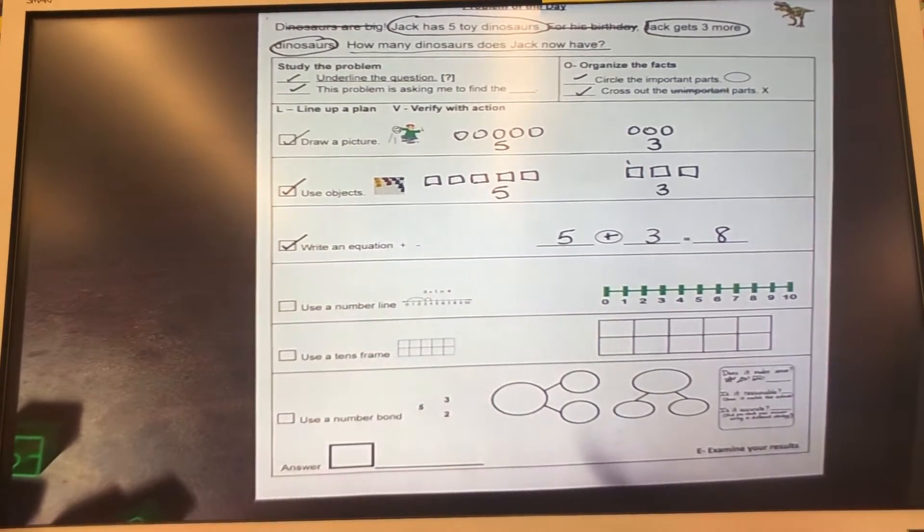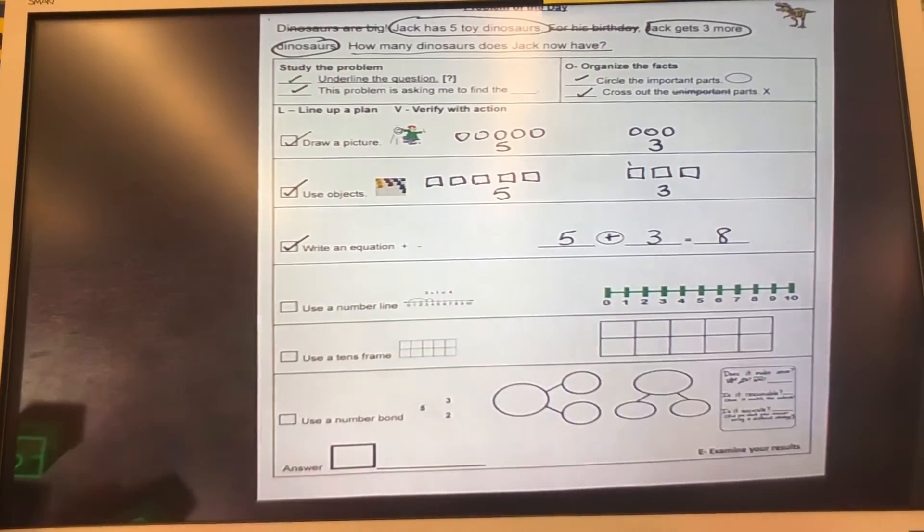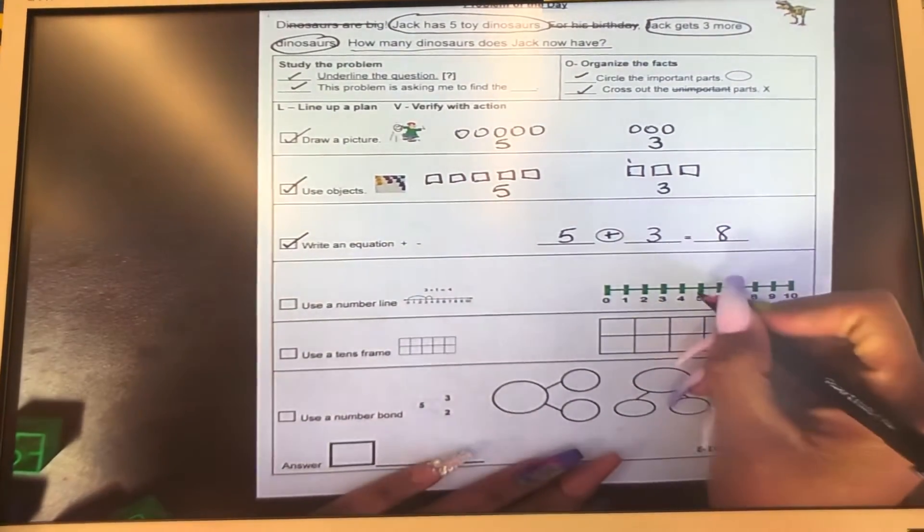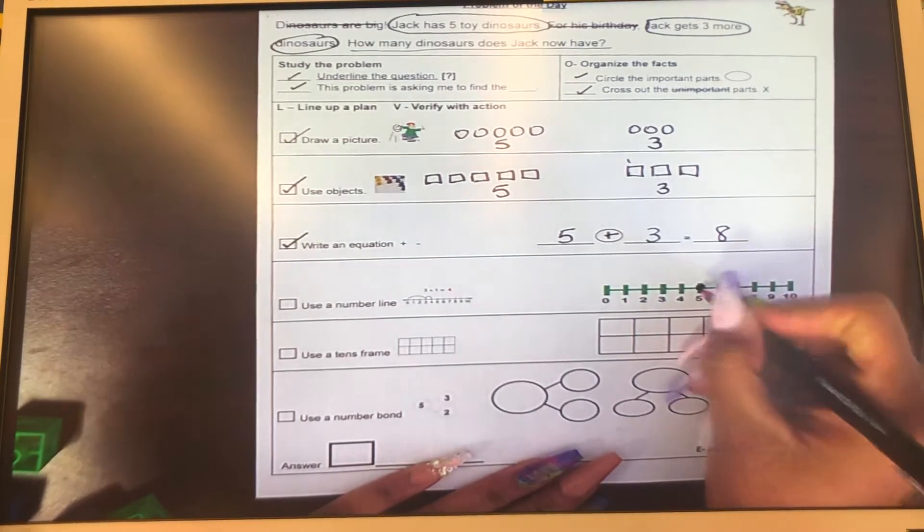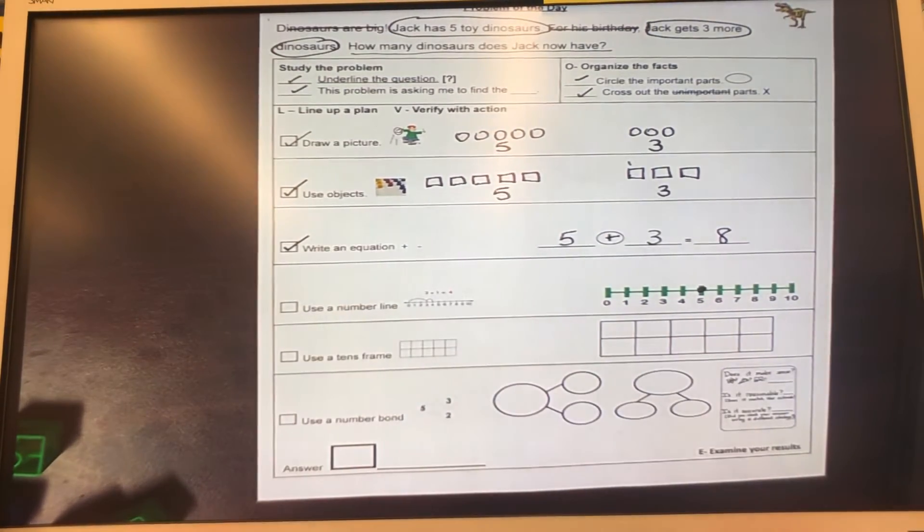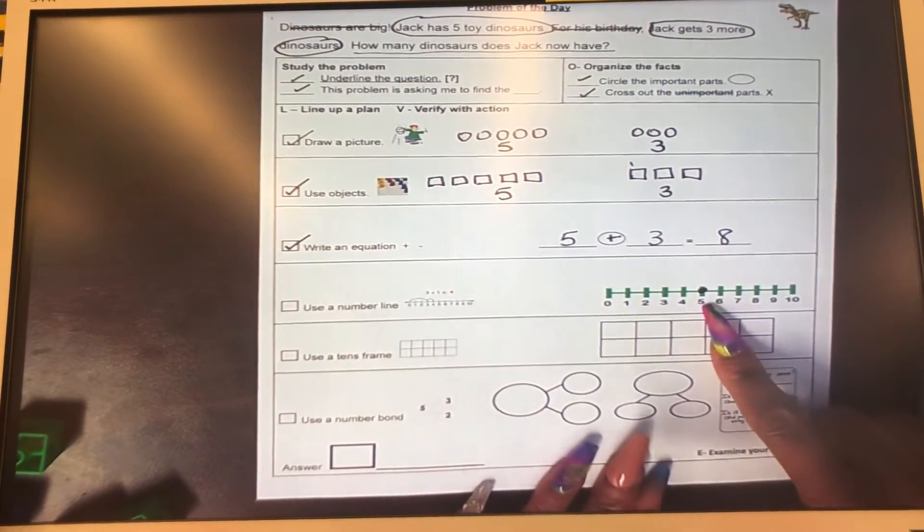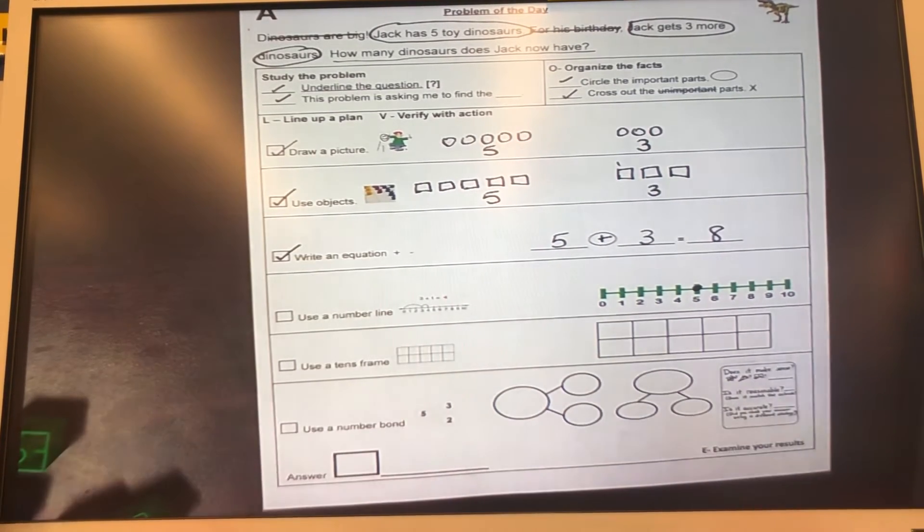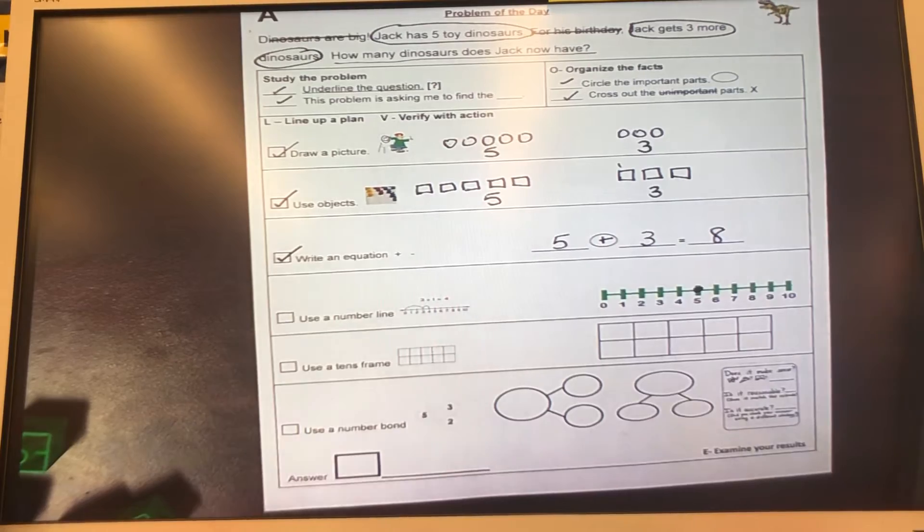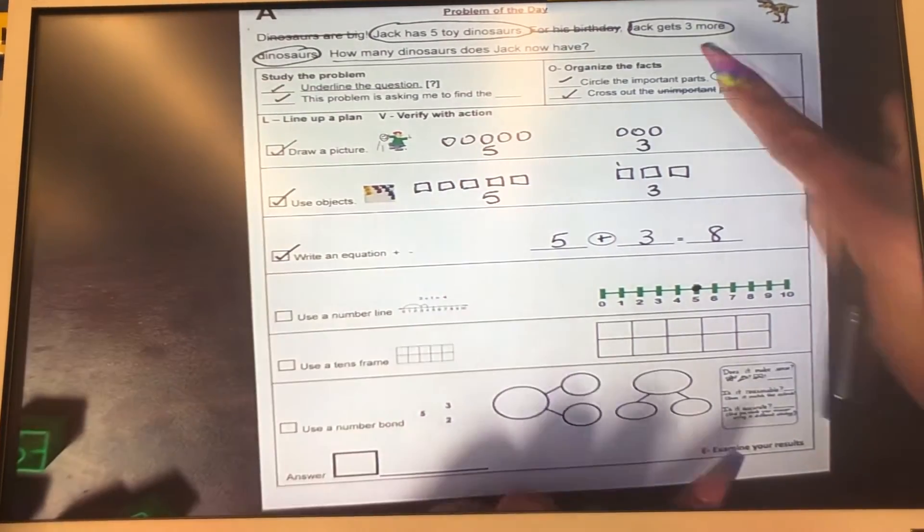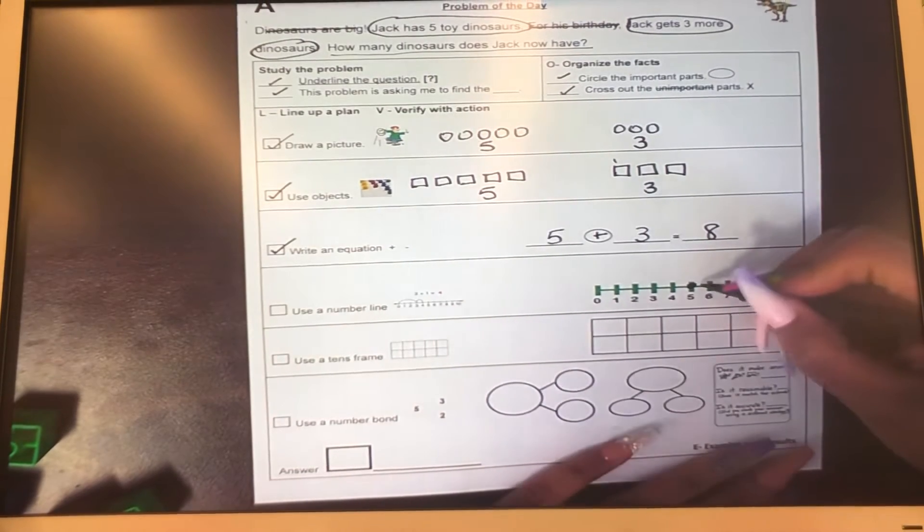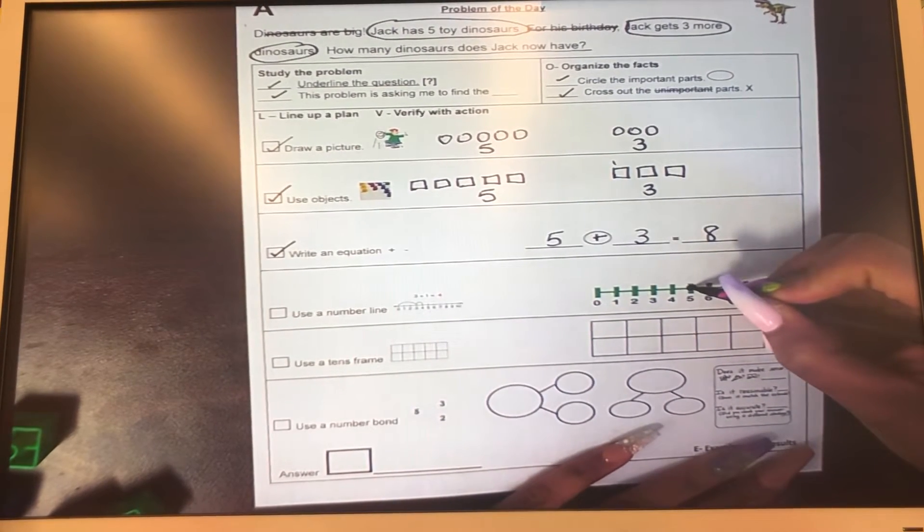Now let's use our number line. So remember at the beginning of the story, Jack has five dinosaurs. We're going to put a little dot on the number five, because that's what we know he has. And now he gets three more for his birthday. So we're going to jump. Remember the bunny hops? Let's do our three bunny hops to reflect the three more dinosaurs he got for his birthday. So watch me hop.